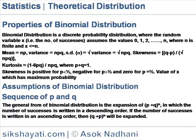Properties of binomial distribution. Binomial distribution is a discrete probability distribution where the random variable x — that is, the number of successes — assumes the value 0, 1, 2, up to n, where n is finite and x is less than or equal to n.